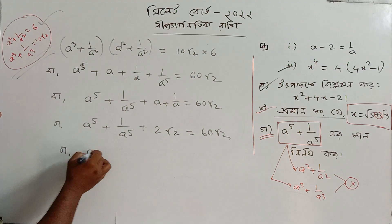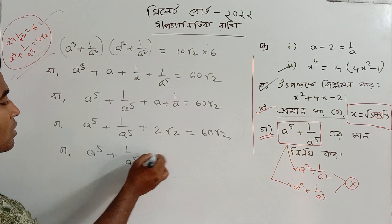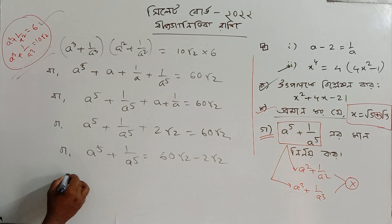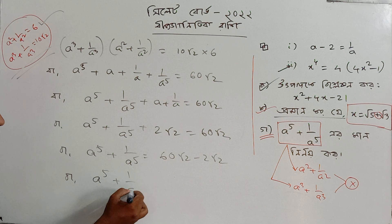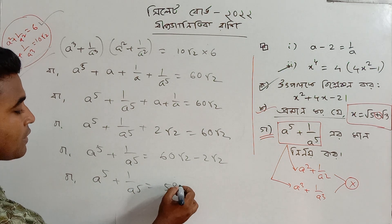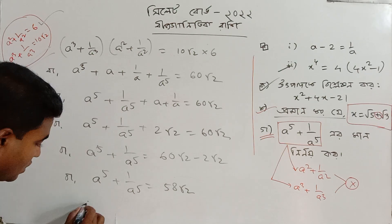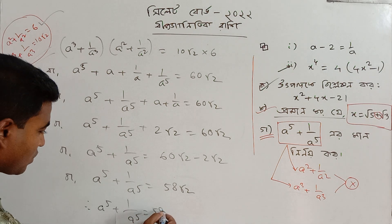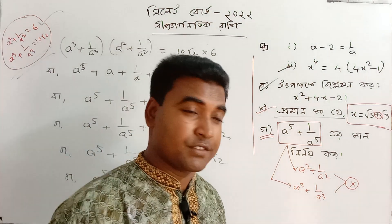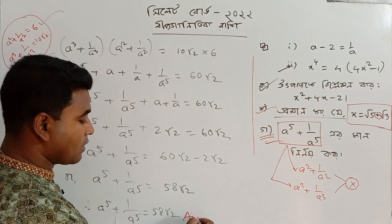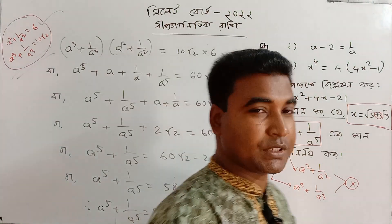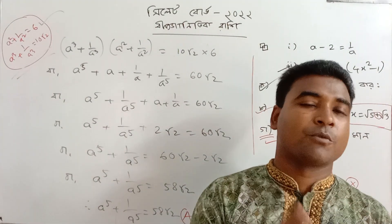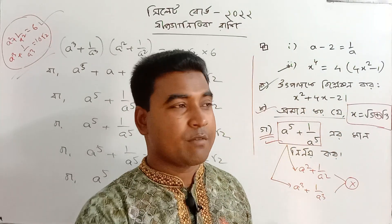So 12 plus 10, giving A⁵ plus 1 by A⁵ equals 8√2. That is the final result. A⁵ plus 1 by A⁵ equals 8√2.